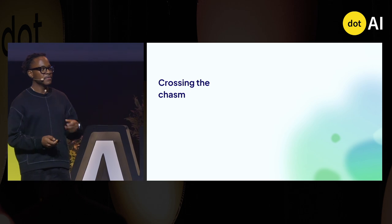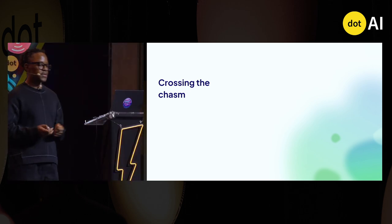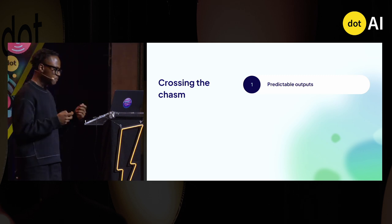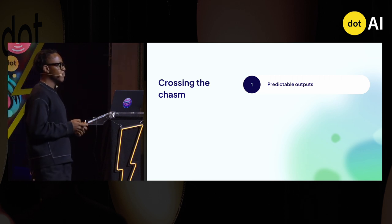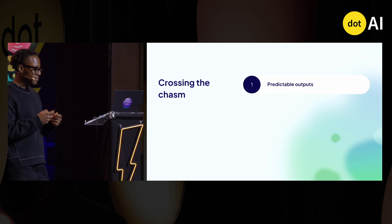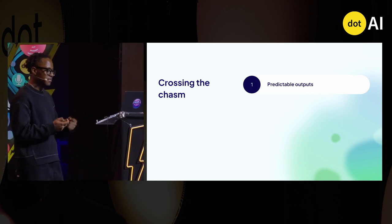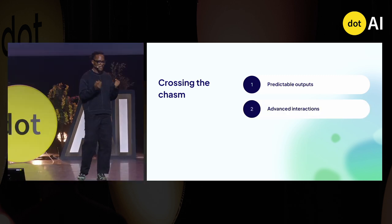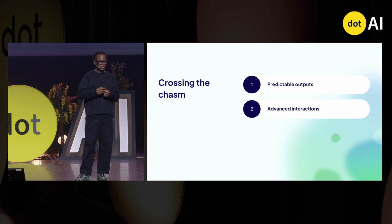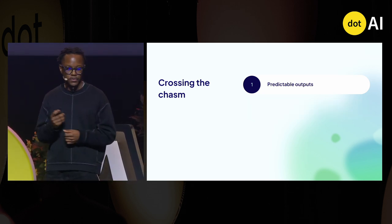In this attempt to help you cross this chasm, I want to talk about two things: the first being predictable outputs — outputs that we know — and the second being advanced interactions. We want to be able to have both of these.